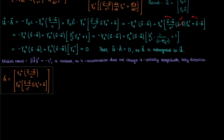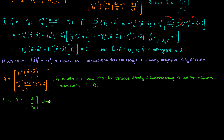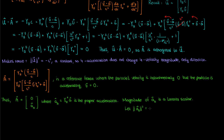Let's bring back our acceleration four vector for more analysis. If I'm in an inertial reference frame where the velocity of the particle is instantaneously zero but the particle is still accelerating, the three velocity becomes zero and our four acceleration simplifies considerably. We can write this simplified four acceleration as (0, a₀), where a₀ is the proper acceleration — the acceleration measured in a reference frame in which the particle is instantaneously at rest. The magnitude of the proper acceleration, like the proper time, is a Lorentz scalar.